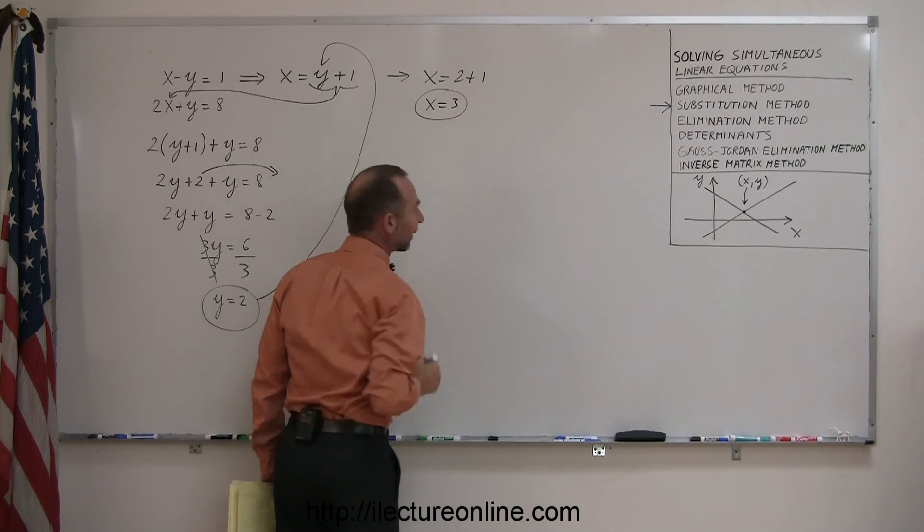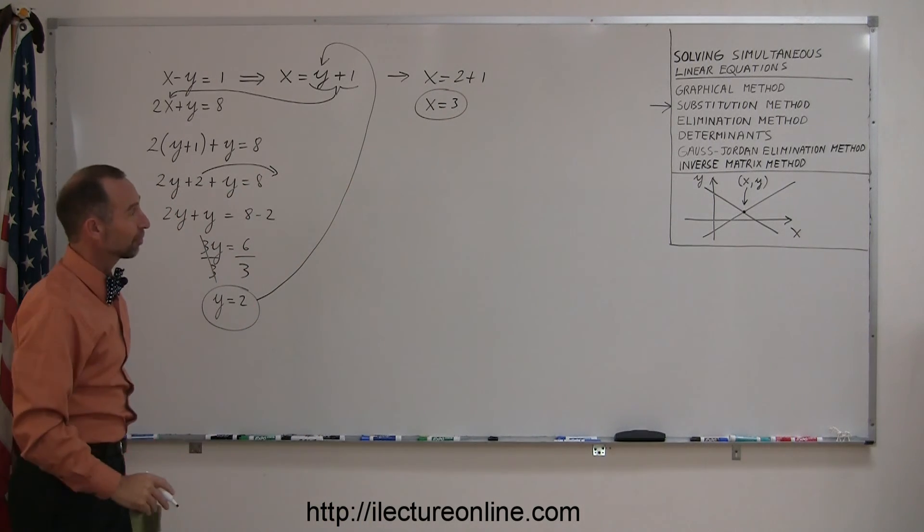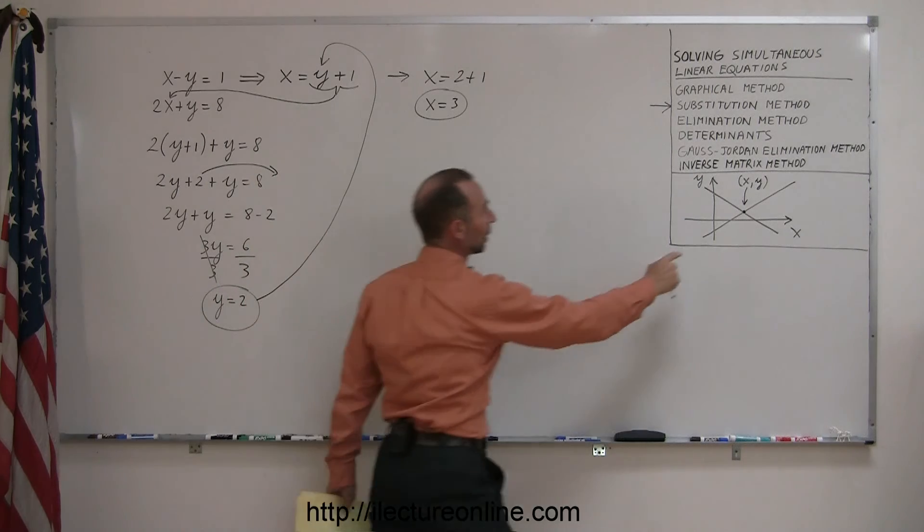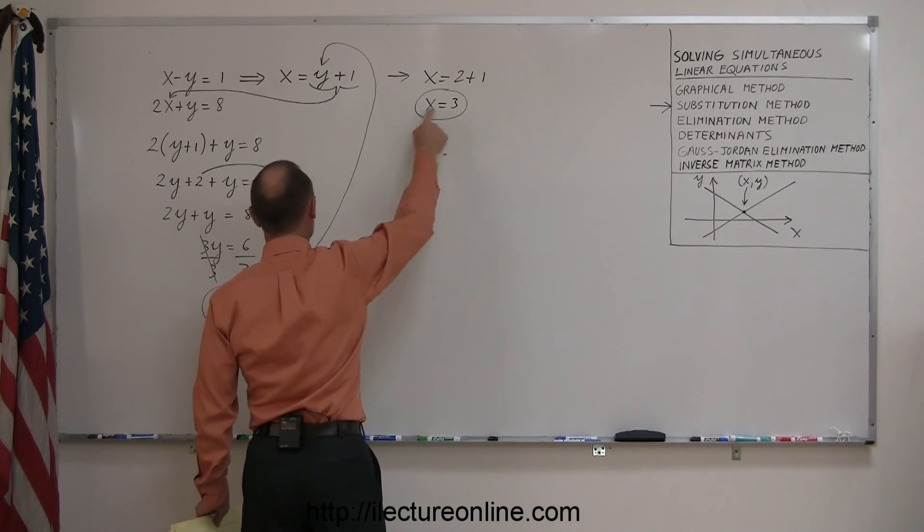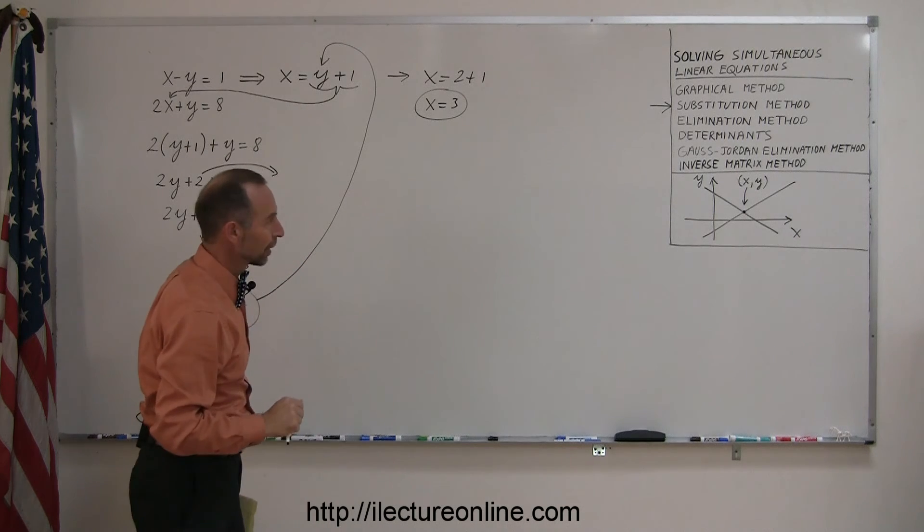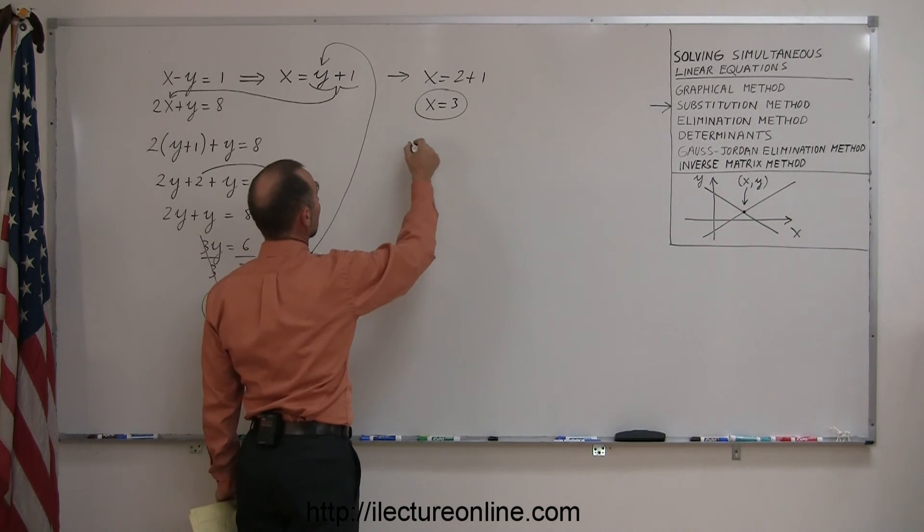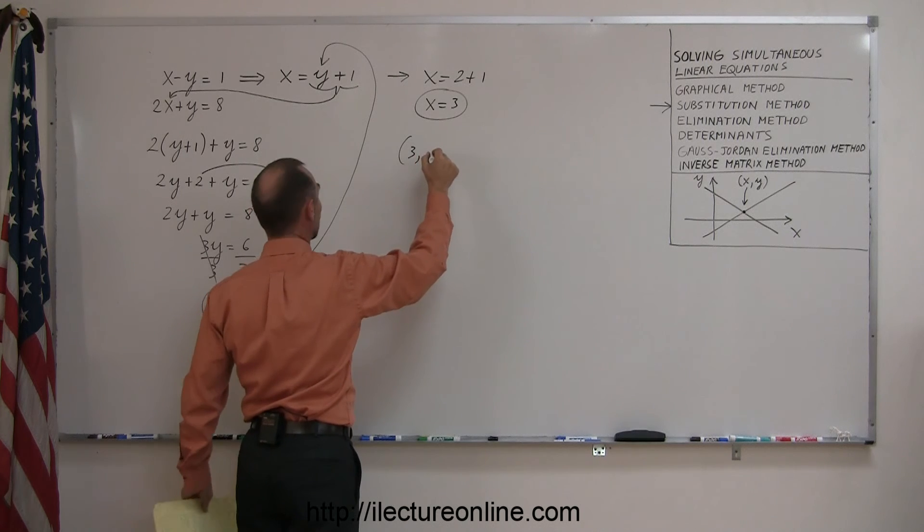And so now you have found the x coordinate of my solution. Remember, wherever the two lines cross, the point has an x and a y value, and here's my x and my y value. So that means the solution is simply 3 comma 2.